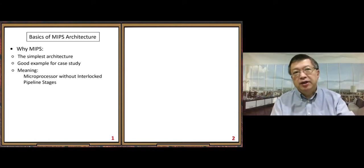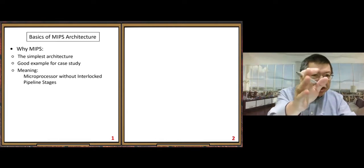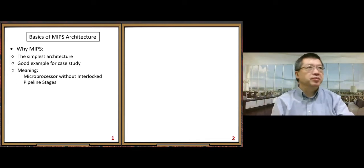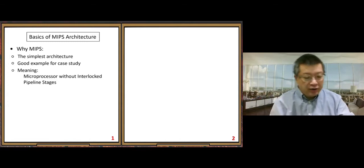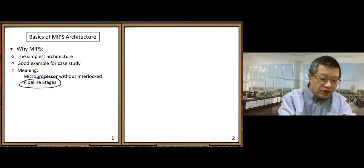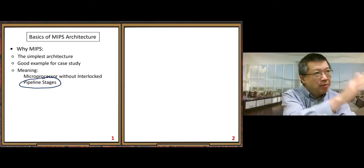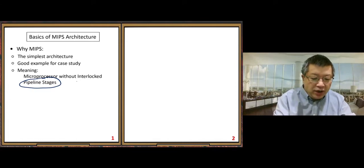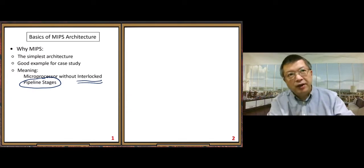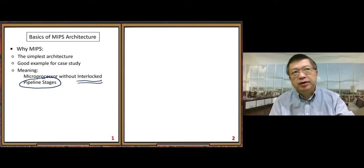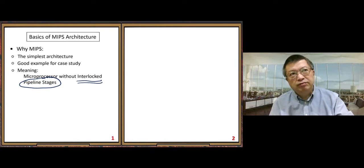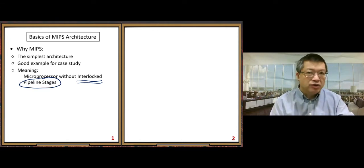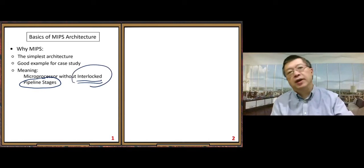The meaning of MIPS is Microprocessor Without Interlocking Pipeline Stages. Starting from the next part, we will learn about pipeline stages and pipelining technique. The exact technical meaning — for this class we will not go there. Here this is just a name, so for the details we may not go that far.